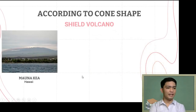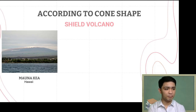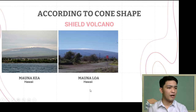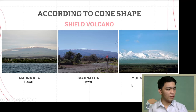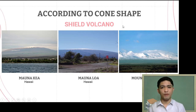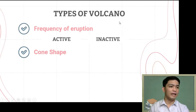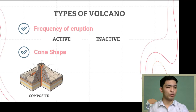Examples of shield volcanoes include Mauna Kea in Hawaii — not steep at all, unlike a typical volcano — Mauna Loa, also in Hawaii, and Wrangell in Alaska. So in summary, volcanoes are classified by frequency of eruption — active and inactive — and by cone shape — composite, cinder, and shield.